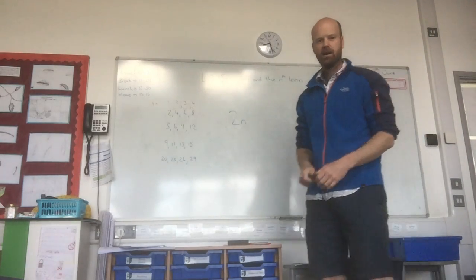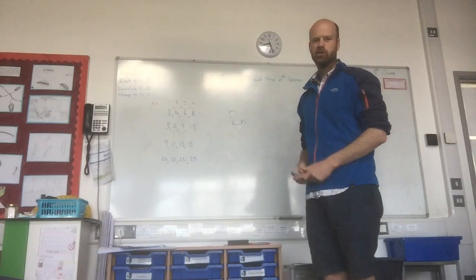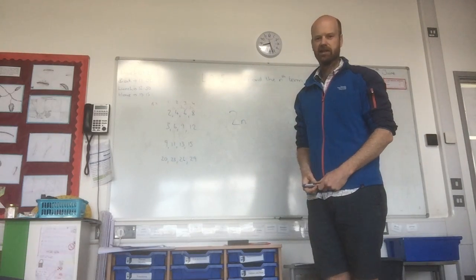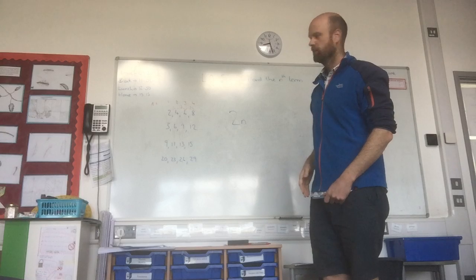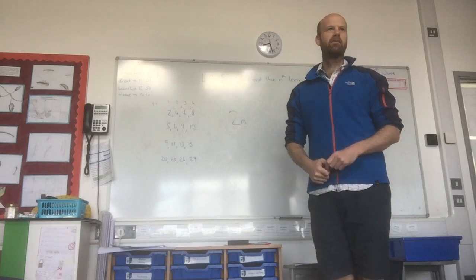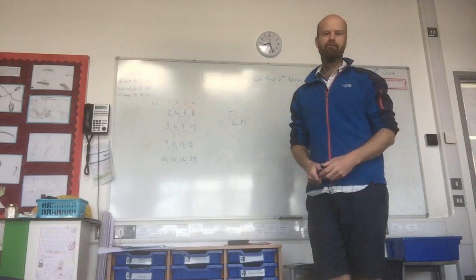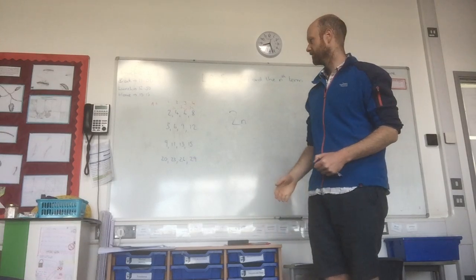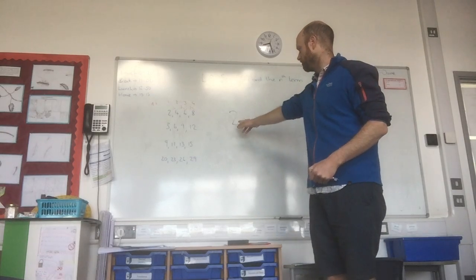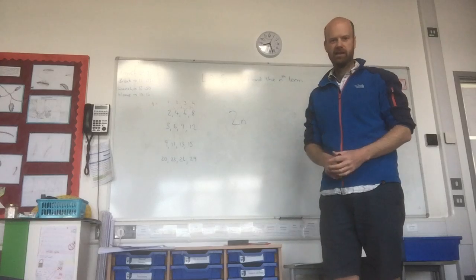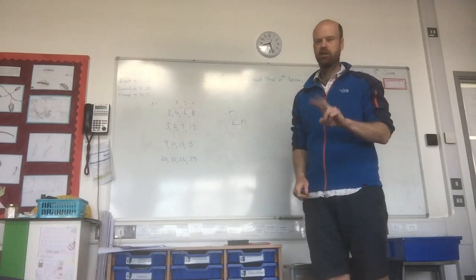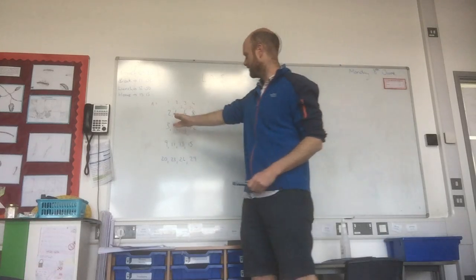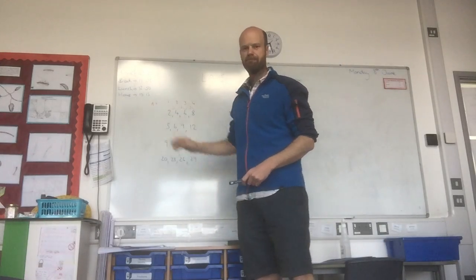2n. In this case, we're not going to need to make an adjustment. We say, well, the first term is n equals 1 — that's the first number in the sequence. Well, 2 times 1 is 2, and that is our first term.